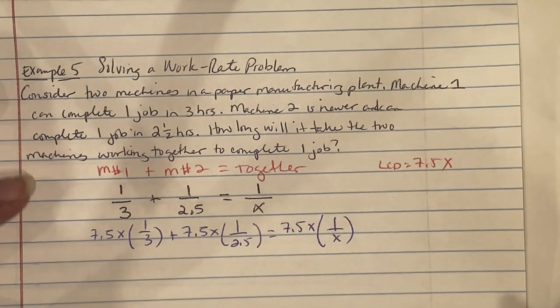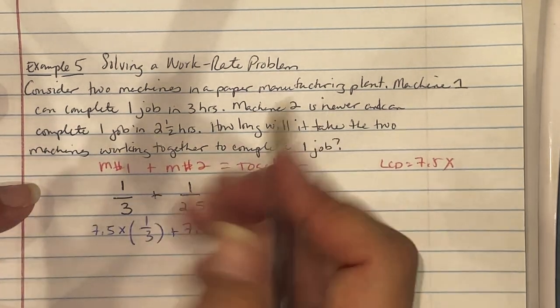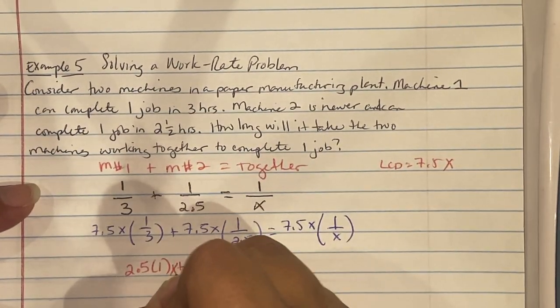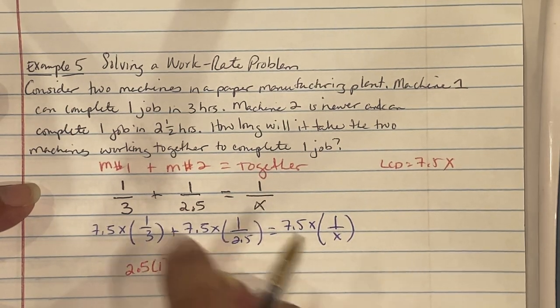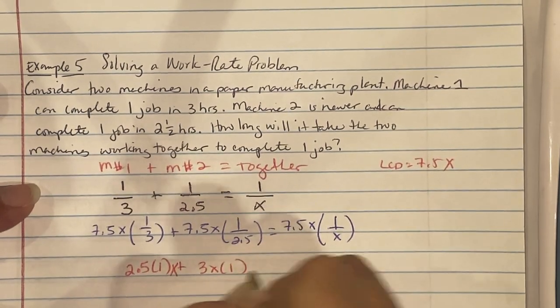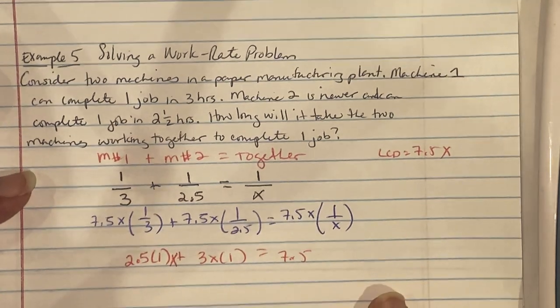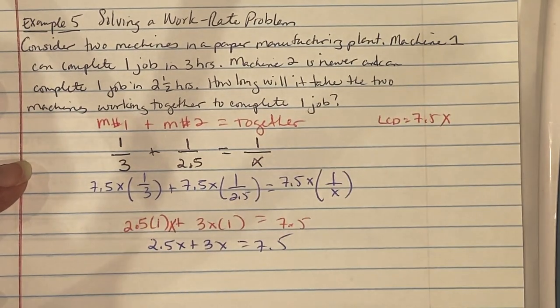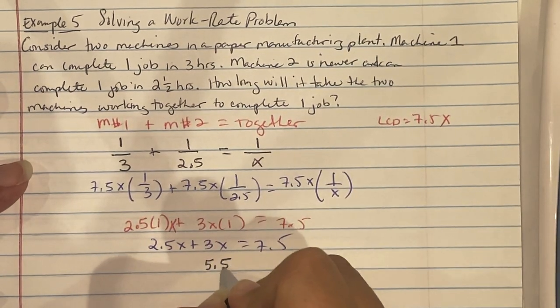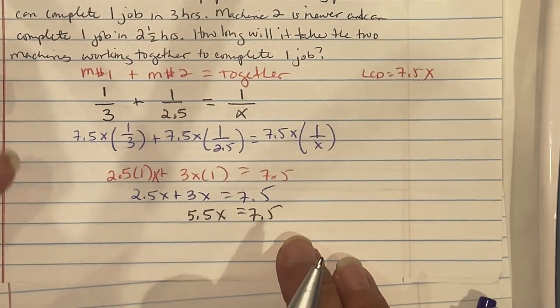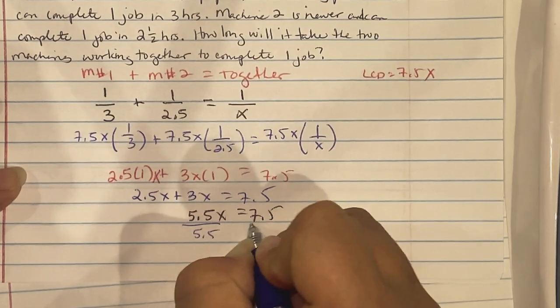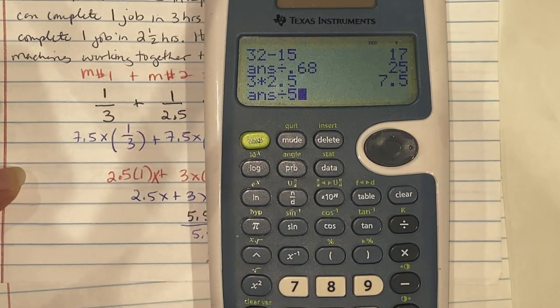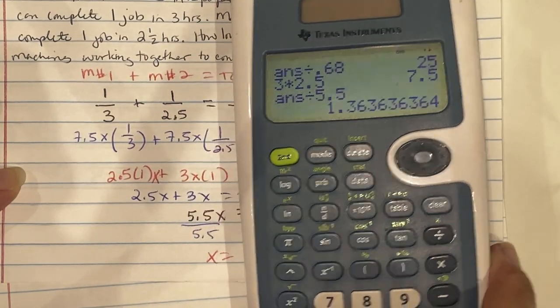So here 7.5 divided by 3 is the same thing as saying 2.5 times my one job with an X. Here 7.5 divided by 2.5 is the same thing as saying 3 with an X, so 3X times my one job. Here our X is canceled and we get 7.5. So 2.5X plus 3X equals 7.5. This is 5.5X equals 7.5. So all we've got to do is divide both sides by 5.5. So 7.5 divided by 5.5 is 1.36 hours.